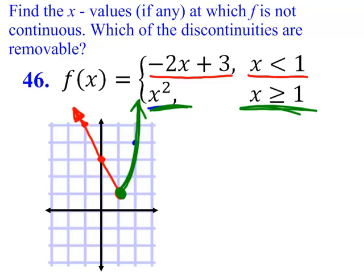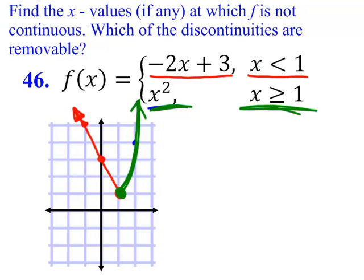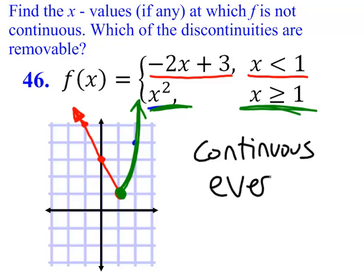And I see that I do have a continuous graph. In fact, it is continuous everywhere. I know that a line is continuous everywhere. I know that a parabola is continuous everywhere. And in this case, the piecewise definition is such that I maintain continuity. So on this one, just say continuous everywhere and call it a day.